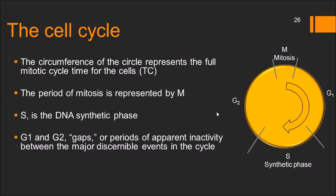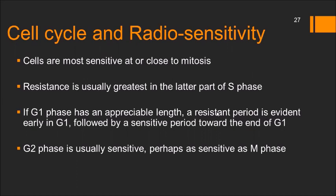Cells are most sensitive at or close to mitosis. Resistance is usually greatest in the later part of S phase. In G1, if G1 has appreciable length, a resistant period is evident in early G1 followed by a sensitive period toward the end of G1. G2 phase is usually as sensitive as the M phase. So mitosis and G2 are sensitive phases, while resistance is greatest in the later part of S phase.